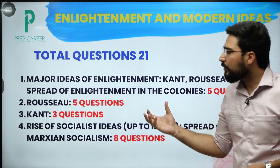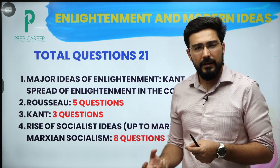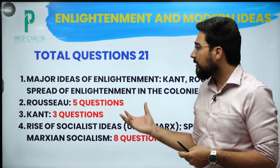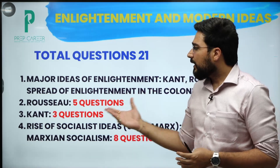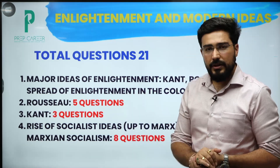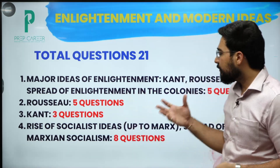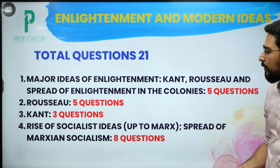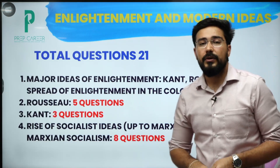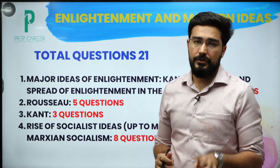Rousseau specifically — independently if you look at the questions — around 5 questions are there. Kant has 3 questions. Rise of socialist ideas and spread — in total we have around 8 questions.